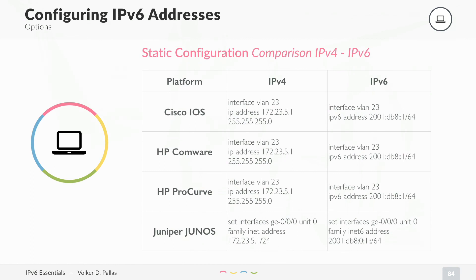With the HP A-series using Comware, it's about the same. HP Procurve is the same. Juniper Junos is also the same — the only difference is you don't set the address under the family inet, but you set it under family inet6. But it's really easy. Try it out!